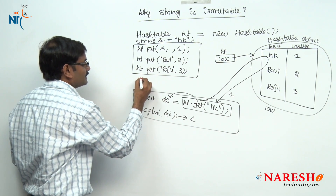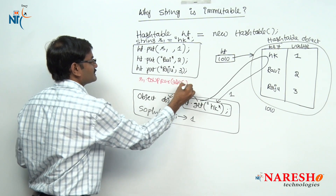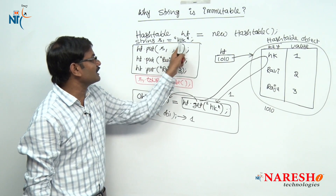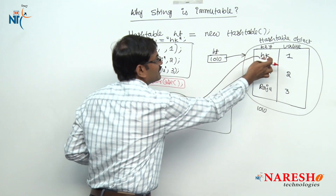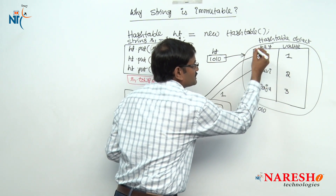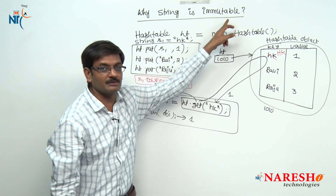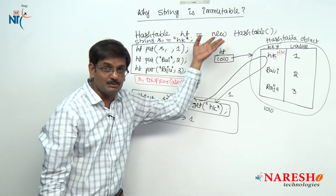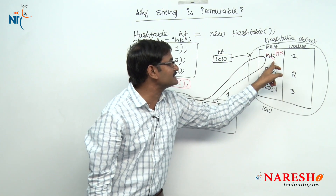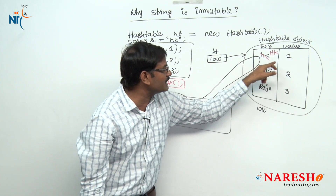Now I am calling s1.toUpperCase(). If I call s1.toUpperCase(), then what happens? s1 is pointing to the object hk, which is stored in the Hashtable. If you call the toUpperCase() method, the characters in the map object change from hk to HK. Now if a string object is not given as immutable, the problem is: when you store a string object as a key inside a Hashtable and modify its data, the modification is stored in the same object.